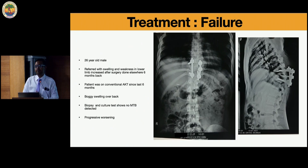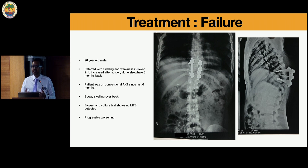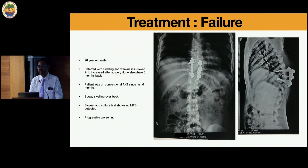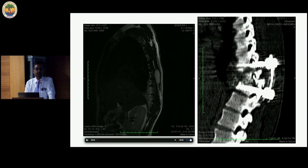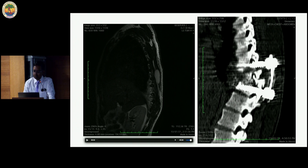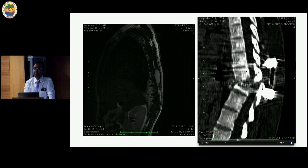Another challenge in KEM and municipal setups: patients operated elsewhere where biopsy yielded nothing, they were started on empirical AKT and inadequately instrumented. This 26-year-old male, sole breadwinner with complete paraparesis and deformity — MRI after surgery showed a soft tissue abscess. We call this presumptive tuberculosis, and there is a very good definition for it in the national program. CT scan showed significant void and completely malpositioned implants.